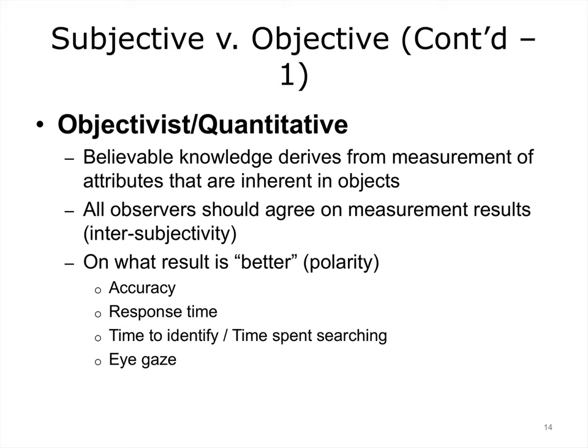Subjectivist and objectivist methods are complementary. Both are useful and convey valuable information in our understanding of systems. The subjective experience of users, whatever the objective facts, is an important influence in their acceptance and use of a system. For example, objective measurements may show that the time for two different systems to perform a task is the same. However, if subjectively users experience that it takes more time and is more frustrating to use one system than the other, this will affect their opinion, acceptance, and behavior with it. The interaction design can affect time perception.